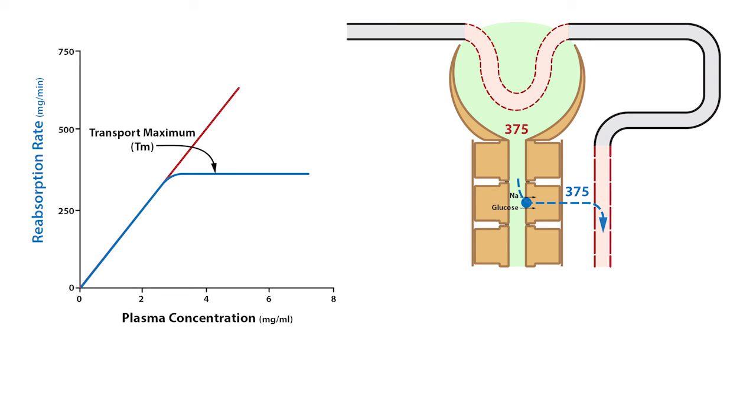Transporter saturation coincides with the appearance of glucose in the urine. The curved part of the reabsorption rate and the excretion rate are referred to as splay. They represent the plasma concentration at which the transporters initially become saturated, but prior to reaching their transport maximum.